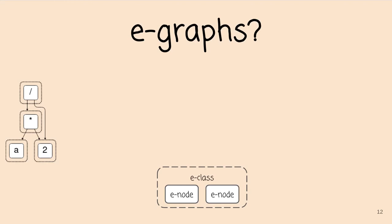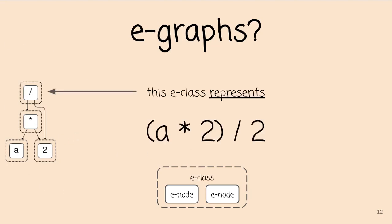Basically, an E-Graph is a data structure that represents an equivalence relation over terms. It's composed of equivalence classes or E-classes, which are sets of equivalence nodes or E-nodes. These E-nodes are basically operators from your language — things like division or multiplication, or childless operators like two or a. Here's an E-graph whose top-level E-class represents the term a times two divided by two. The edges go from E-node to E-class, meaning an operator takes as child not another operator but a whole family of equivalent operators — an E-class. This isn't a very interesting E-graph because each E-class only has a single E-node, so we need to grow it.